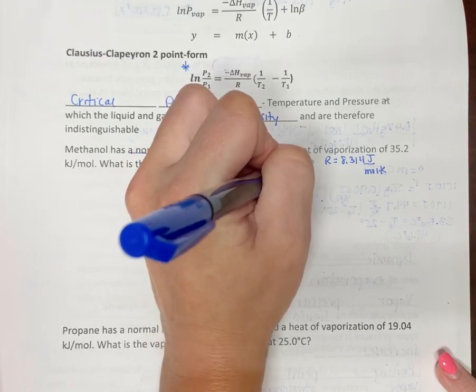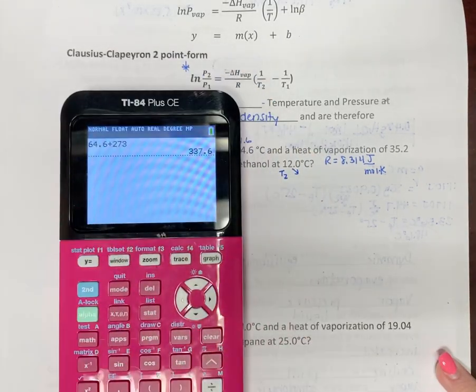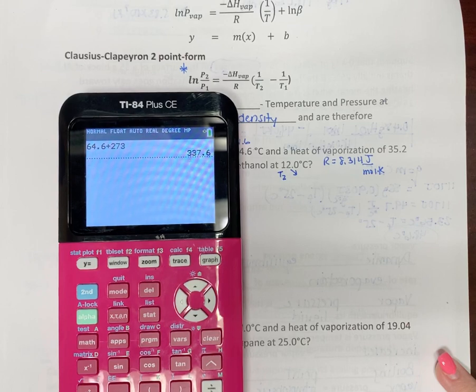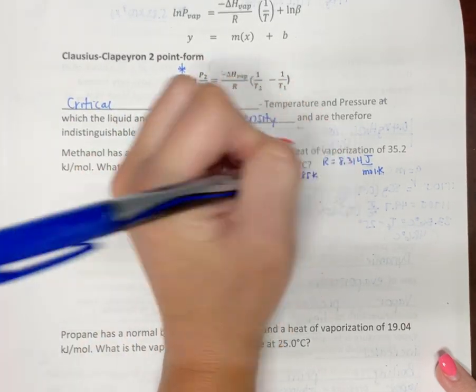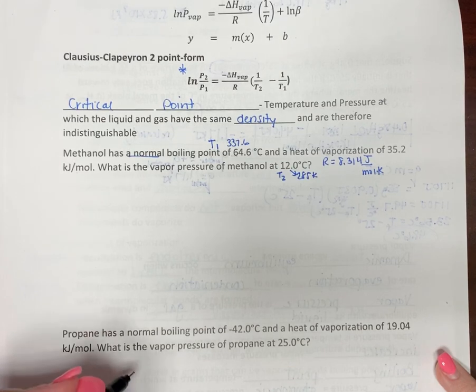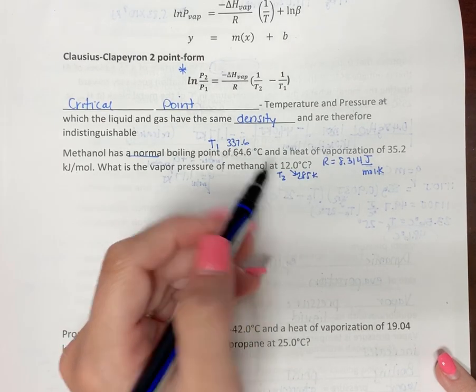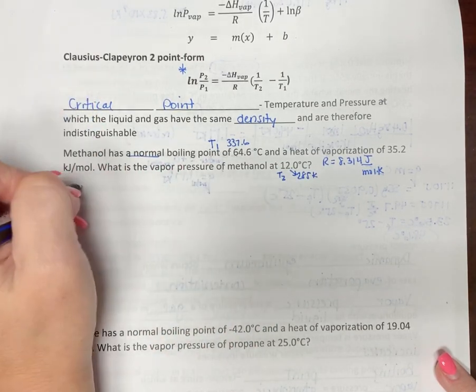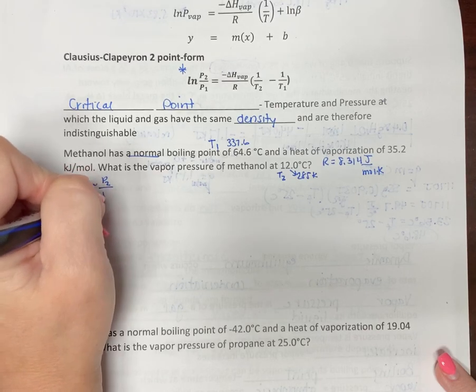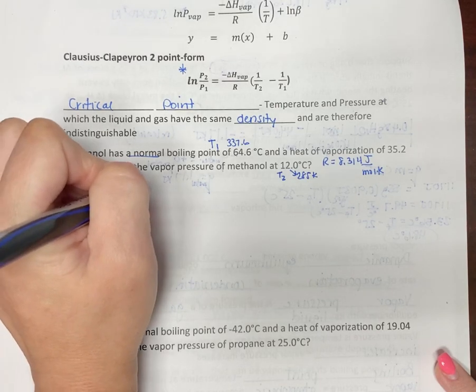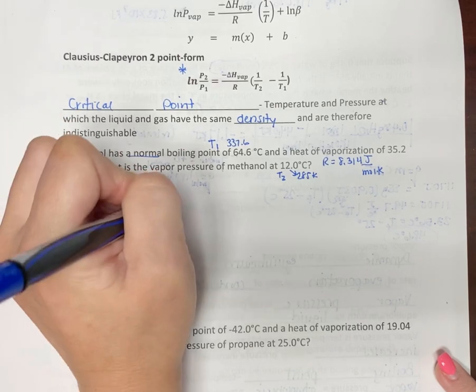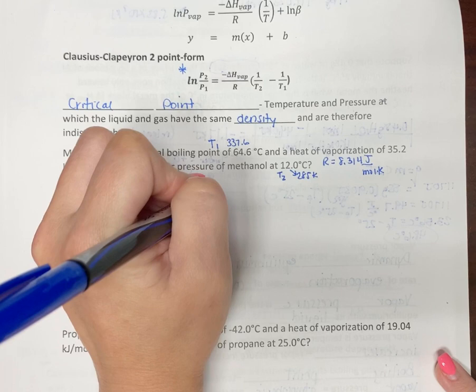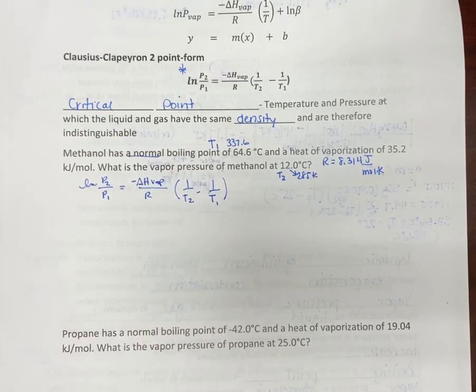So, let's add 273. So 64.6 plus 273, so 337.6. And so this is normal, so we're going to call this T1. So that makes this T2. And so now we need to get that in Kelvins. So 12 plus 273, 285 Kelvins. Okay. So T2. Let's write out our P2, P1, negative delta H vaporization over R, 1 over T2 minus 1 over T1.